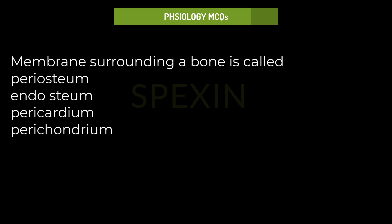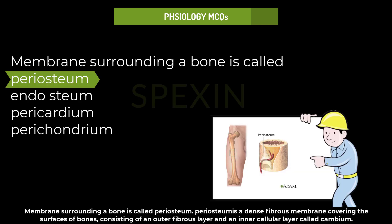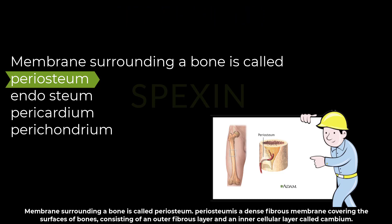Membrane surrounding a bone is called: periosteum, endosteum, pericardium, or perichondrium? The membrane surrounding a bone is called periosteum. Periosteum is a dense fibrous membrane covering the surfaces of bones, consisting of an outer fibrous layer and an inner cellular layer called cambium.